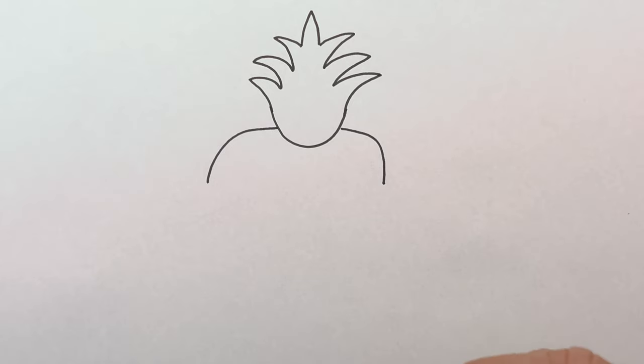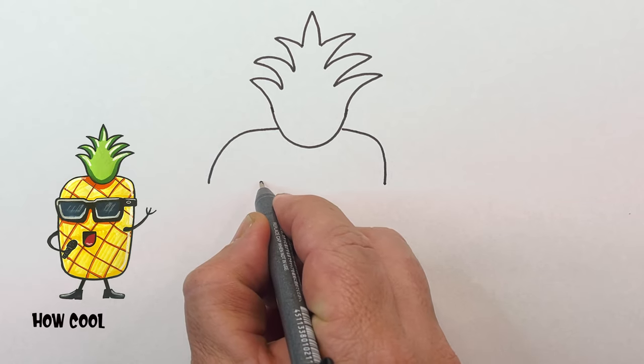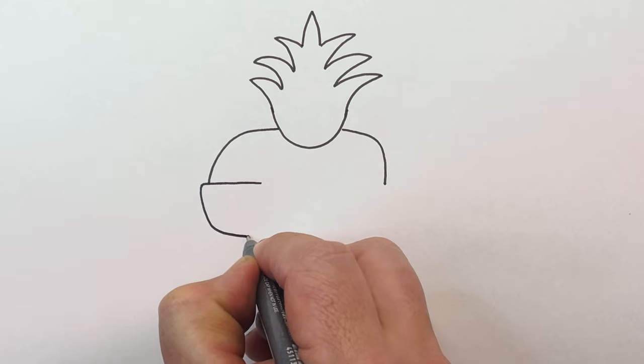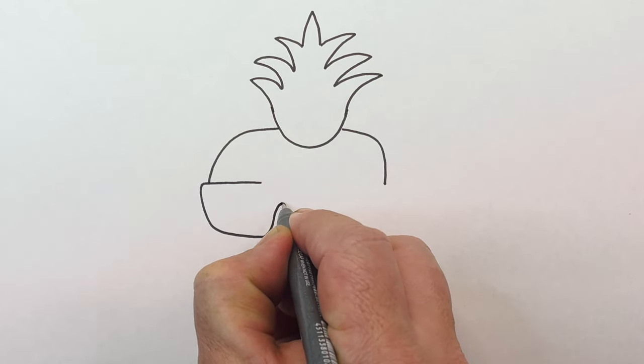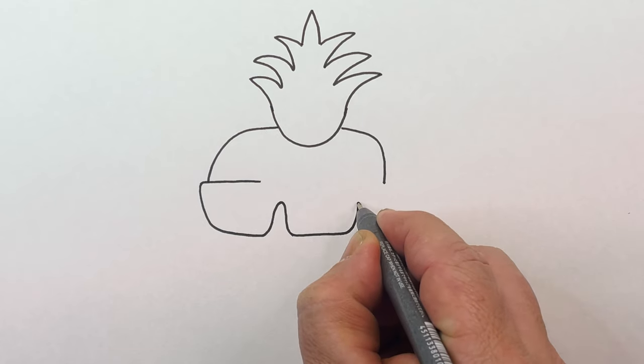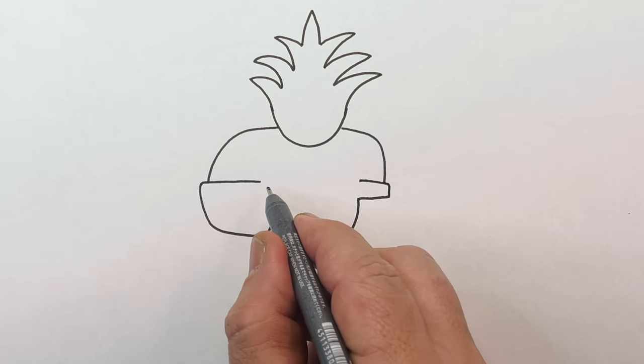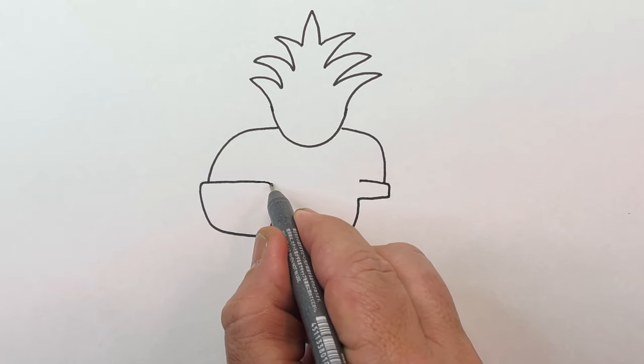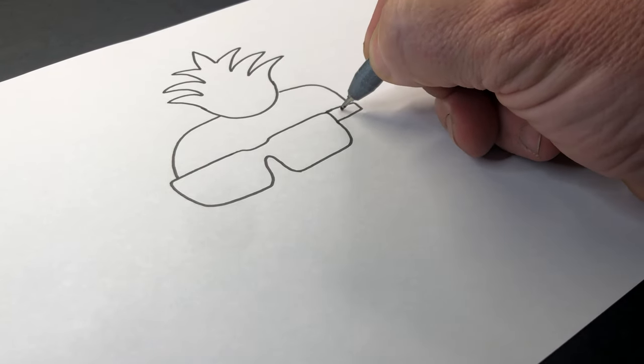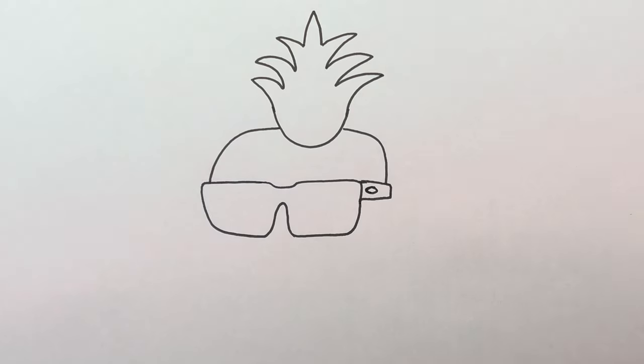Now this pineapple is going to be wearing sunglasses so let's put some sunnies on. Little line like this coming up down and then back around like this. You're going to see the side of the sunnies here. And I'm going to just bring this one down up and around like that. Now you could put on your favorite brand like Oakley's. I'm going to put a little thing like that for the Oakley's symbol.